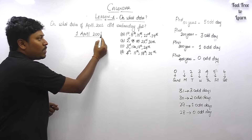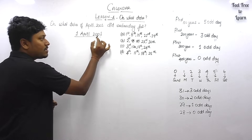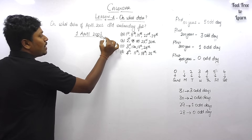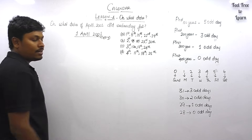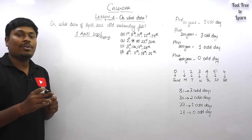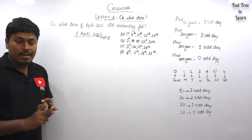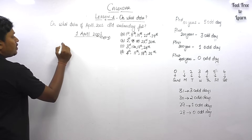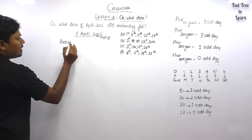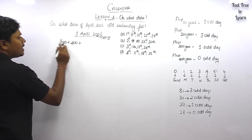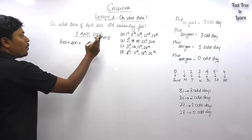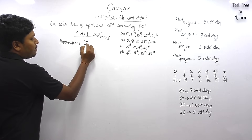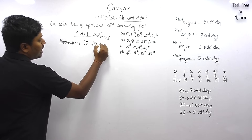Year 2001 — check whether it is a leap year or an ordinary year by checking the last two digits. The last two digits are 01, which is not divisible by four, so 2001 is an ordinary year. For an ordinary year, February has only 28 days, giving zero odd days. We write 2001 as 1600 plus 400 equals 2000, with the remaining one year. Before April we have January, February, and March.